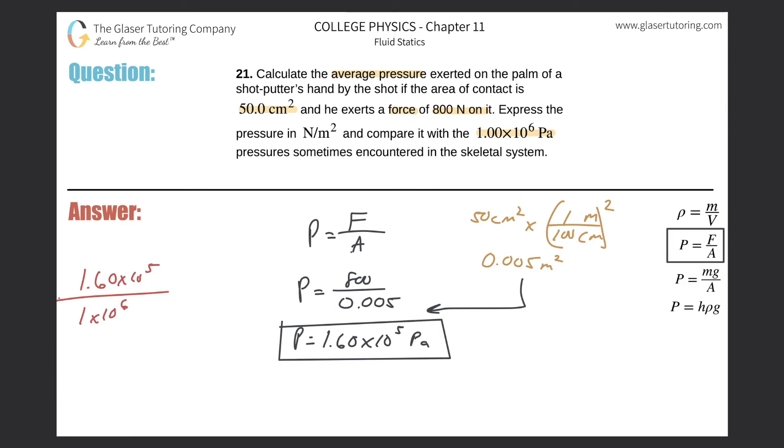all right, 1.6, we're finding the ratio in relation to the skeletal system. So if I take that 1.6 times 10 to the 5 and then divide it by 1 times 10 to the sixth, we realize that, I don't really know why I needed a calculator for that, but I plugged it in anyway. This is going to be 0.16, meaning that compared to the skeletal system, the pressure on the shot putter's hand is going to be 0.16 that of pressure sometimes encountered in the skeletal system. So that should be good.